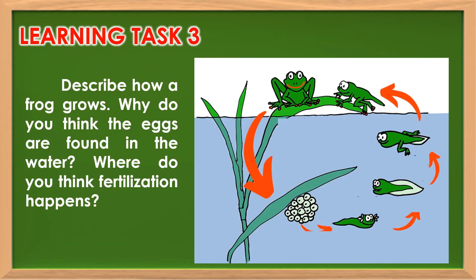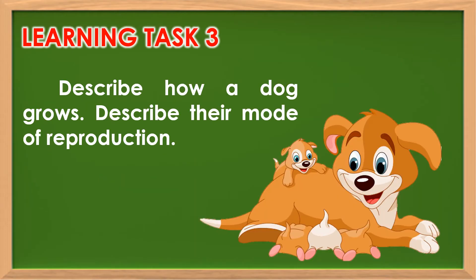For Learning Task 3, describe how a frog grows. Why do you think the eggs are found in the water? Where do you think fertilization happens? Also describe how a dog grows and describe their mode of reproduction.